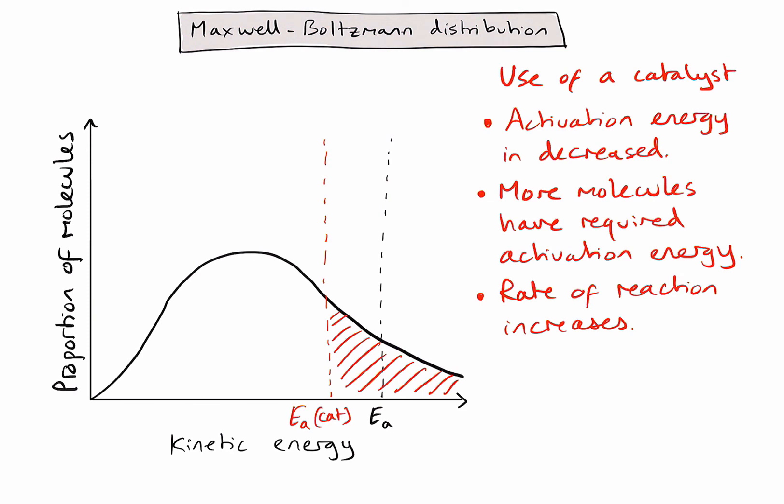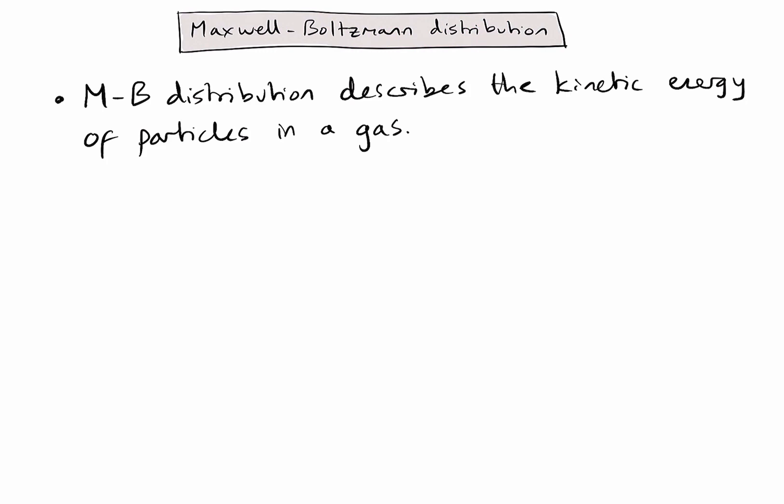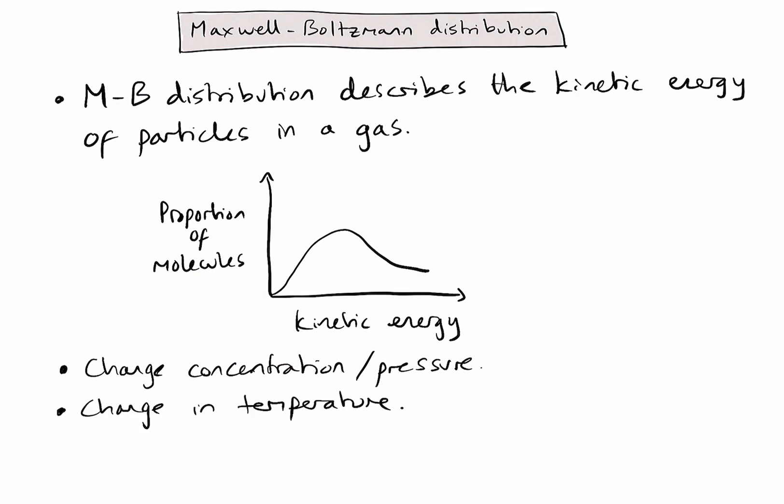Let's summarize the key points from this video. A Maxwell-Boltzmann distribution describes the kinetic energy of particles in a gas. The curve shows that the particles have a distribution of kinetic energy, not identical kinetic energies. You will need to be able to sketch this graph and consider how it changes when we increase concentration or pressure, increase temperature, or use a catalyst.